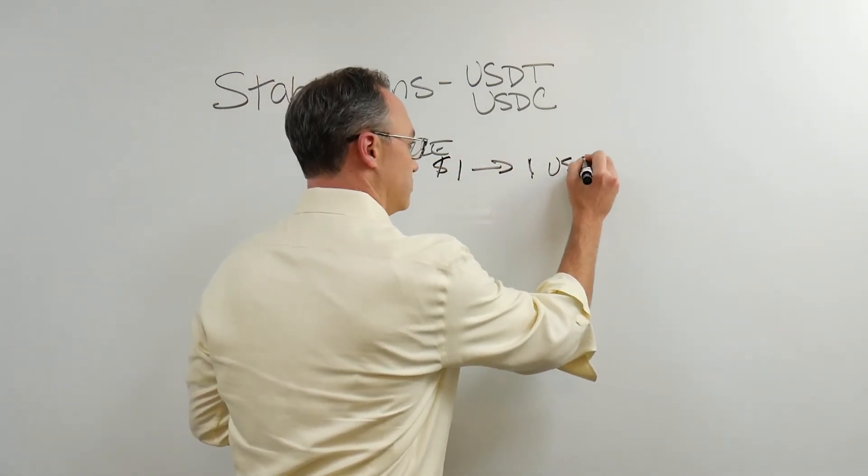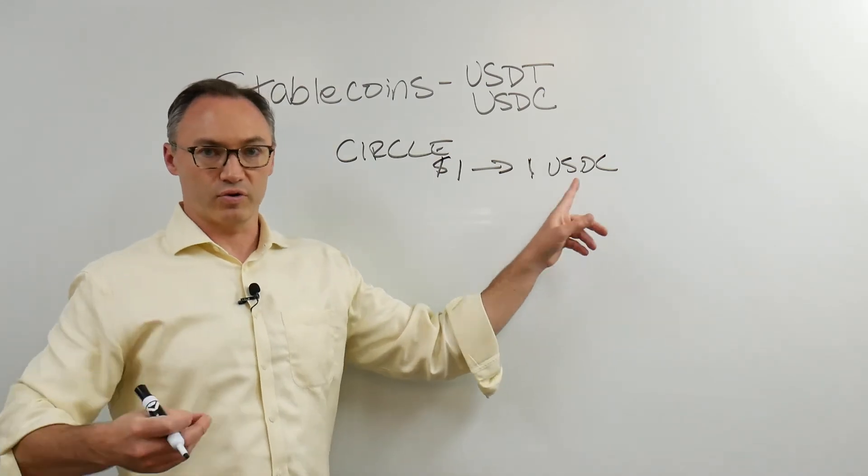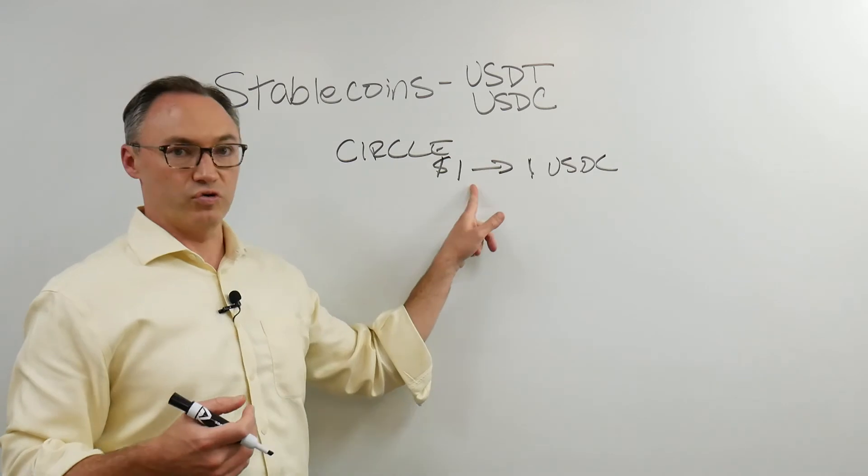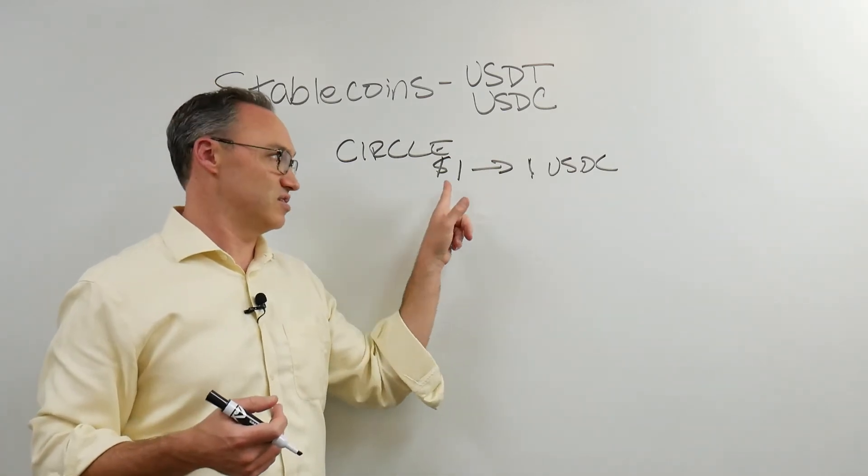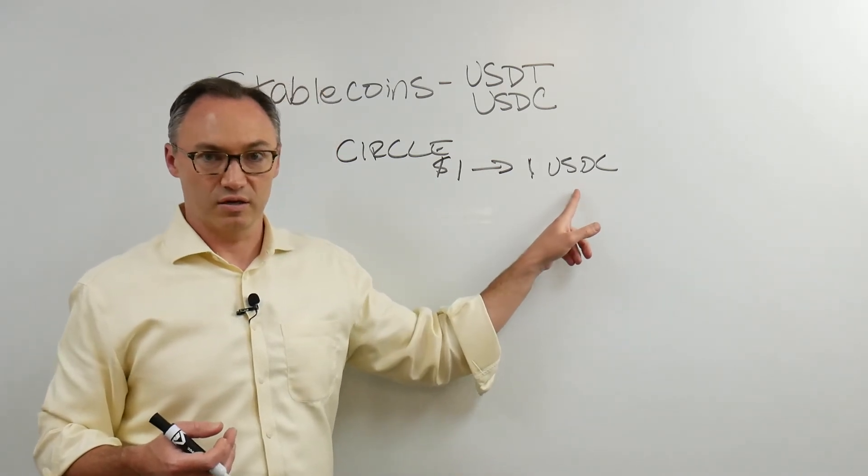This is audited every month. So every month, Grant Thornton goes in and says, yes, you have an equal number of USDC to fiat to dollars. We have this, we see this many dollars in the bank, and you have this many coins outstanding. Okay, Coinbase started using USDC.